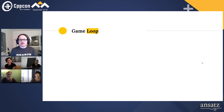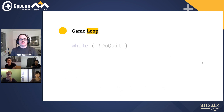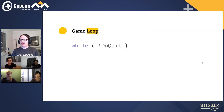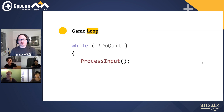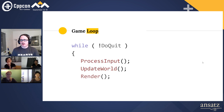So how do you write a game? It's easy. You need to write a game loop. So what's a game loop? It's a very simple thing. It's basically a while loop that ends only when someone presses the quit button. So what do you do? You process the input of the user, then you update the world, and then you render, and then you loop. Done. You made a game.